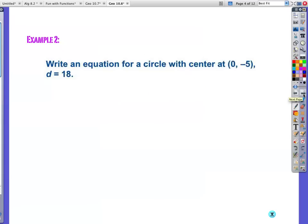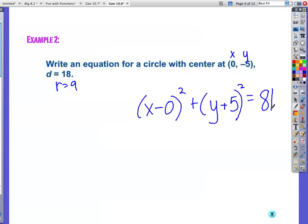All right, here's your center. You have (0, -5), x and y. Your diameter is 18, which makes your radius 9, so you start in with x minus your x value, which is 0, squared plus y minus the y value, which is negative 5, so that makes it a plus 5 quantity squared equals the radius squared. Well, the radius is 9, so I square that, I get 81.